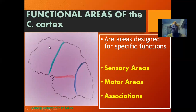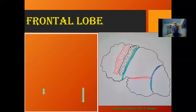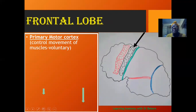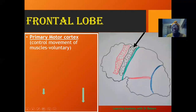We have the cerebral cortex on the frontal lobe, parietal lobe, temporal lobe, and occipital lobe. Let's look at the frontal lobe first. The frontal lobe is separated from the parietal lobe by the central sulcus, highlighted in green. The region anterior to it is the frontal lobe. The first functional area is the primary motor cortex, which controls motor activity — voluntary movements such as moving the hand or rotating the head.